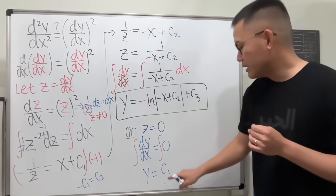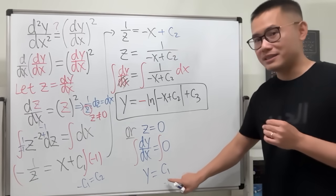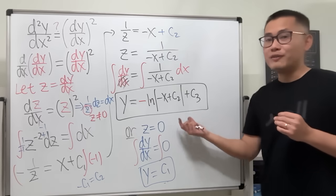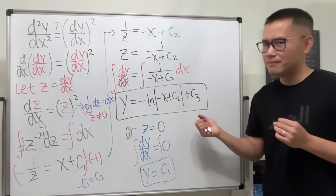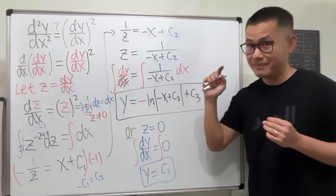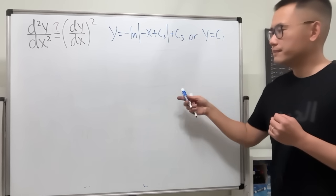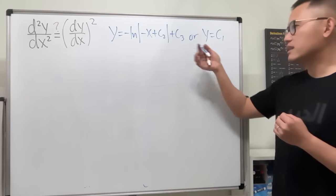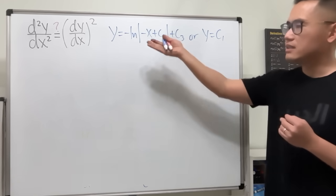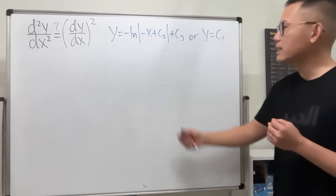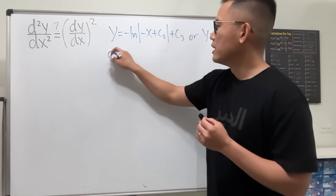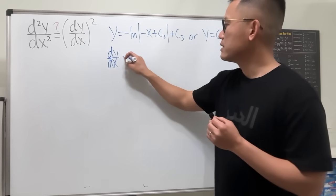So the complete solution set has two cases: either y equals a constant c₁, or y equals the logarithmic function we found. Let's verify the logarithmic solution by differentiating it.